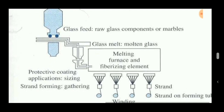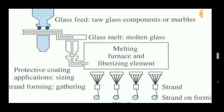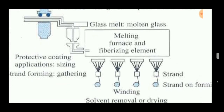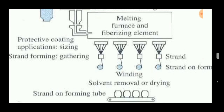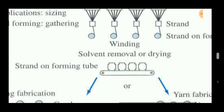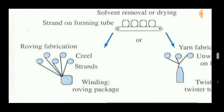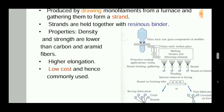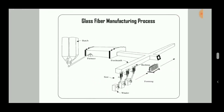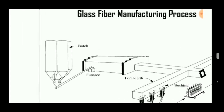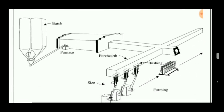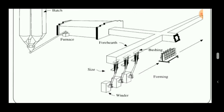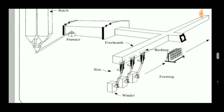In the furnace, raw glass materials are fed in, the glass melts, and the glass is drawn out. It can be wound on reels so that different yarns can be produced for use in composite material manufacturing. This simple diagram shows a hopper where raw materials are put together, then fed into the furnace, and finally glass fibers are drawn from the bushing and wound into reels.